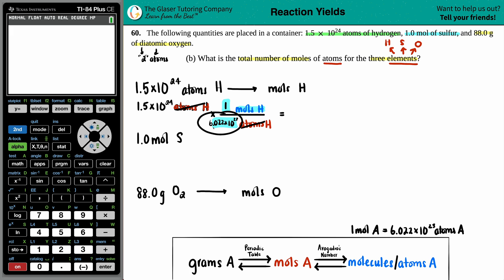Avogadro's number is in the denominator, so we're going to divide. I'll use the EE button for scientific notation: 1.5 EE 24 divided by 6.022 EE 23. Press enter. Your total sig figs comes from the beginning value. Since you have two sig figs in the beginning, you need two sig figs at the end. So this is 2.5 moles of H.